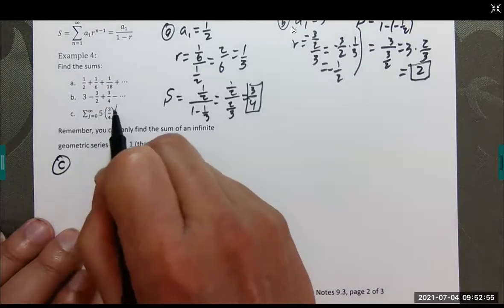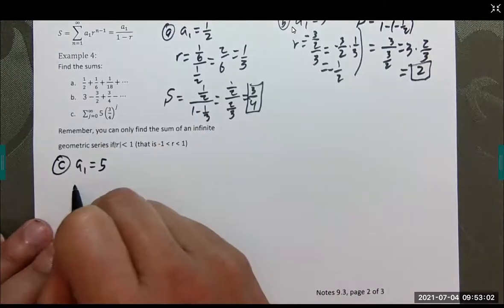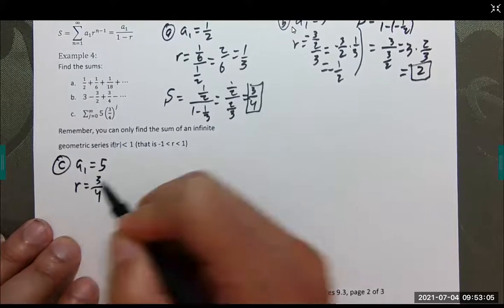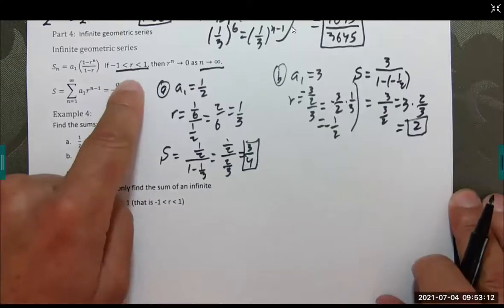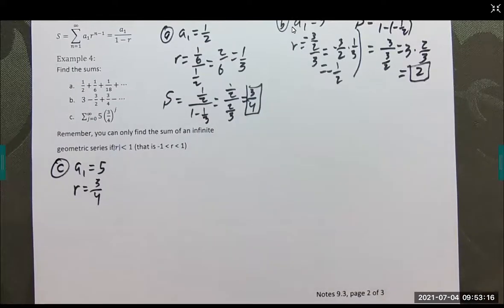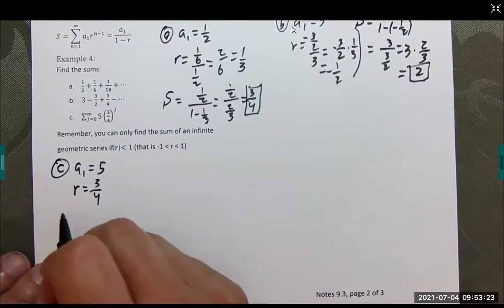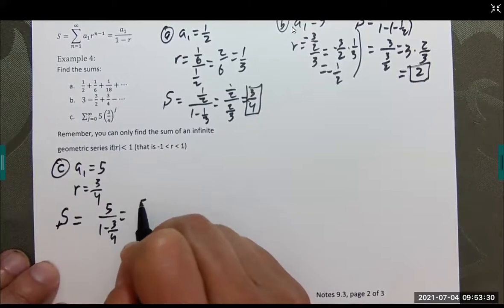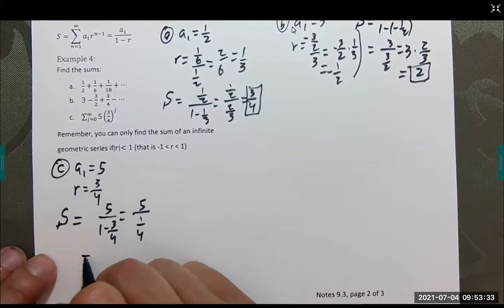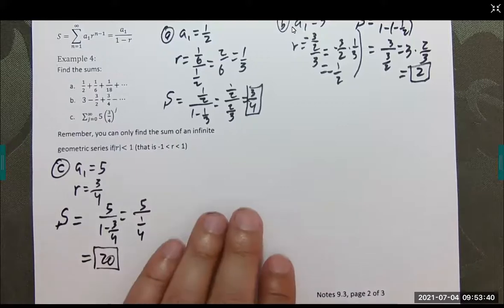Let's try part C. When I plug in zero there, anything to the zero power is one. A sub 1 in this case is just 5 times 1 for the first term. R in this case is the 3/4. That's our common ratio, which is between negative 1 and 1, which fits our criteria. If it's not, we just say it diverges. If it comes to a specific number, we say it converges. S is 5 over 1 minus 3/4. S is going to be 20 in this case. Again, this is adding up an infinite number of pieces and getting a finite number. That's crazy.